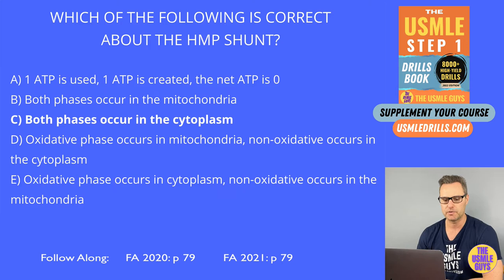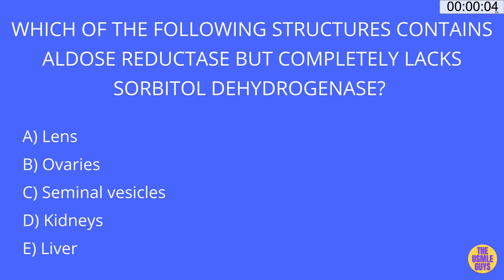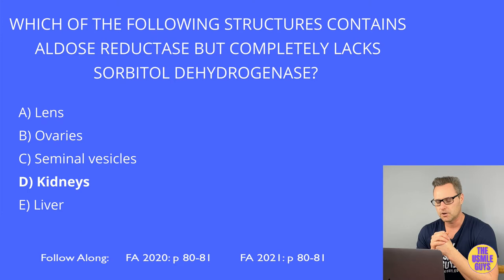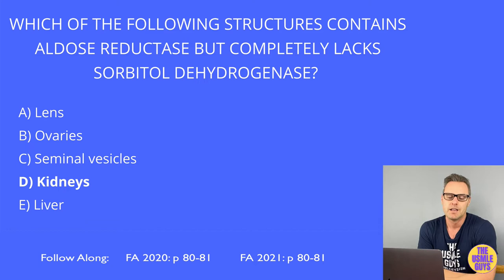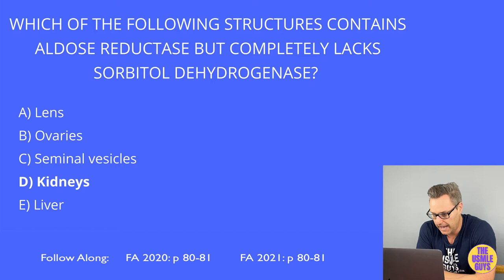The correct answer here is D. Let's talk about disorders of both fructose and galactose metabolism. First up, we have essential fructosuria. This is inherited in an autosomal recessive manner, and this is due to a deficiency of the fructokinase enzyme.